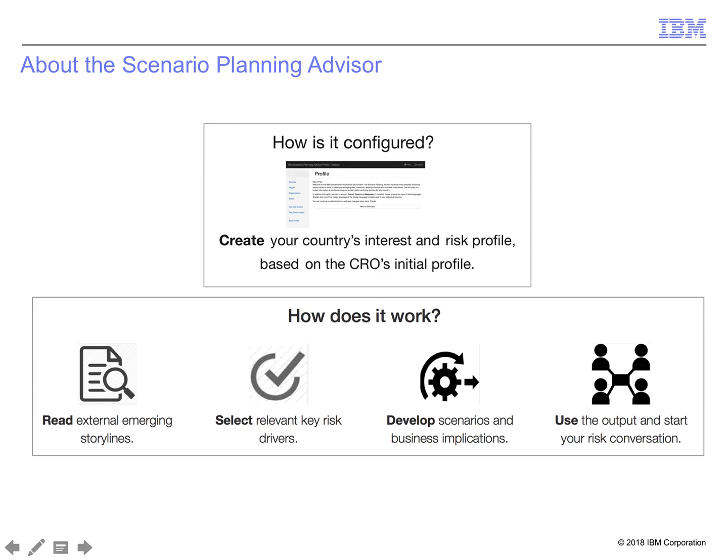To use SPA, users first configure it and then work through the steps to arrive at a useful set of generated scenarios. To configure it, users describe their region's interests regarding local, national, and international events, describe their region's interest profile, and craft models of risk drivers and the consequences of encountering emerging risks.